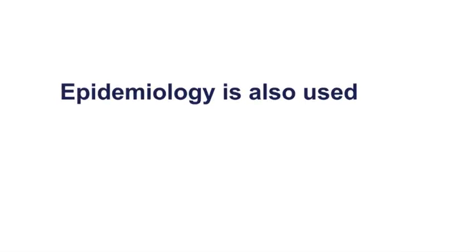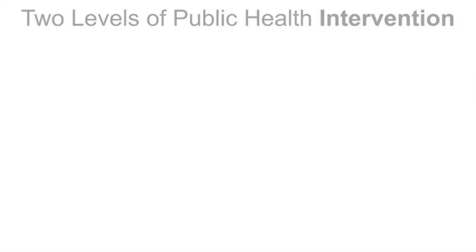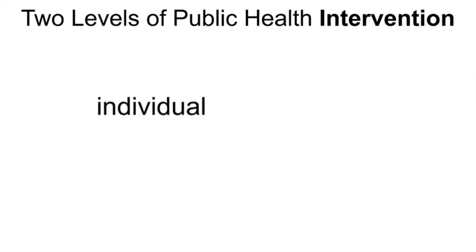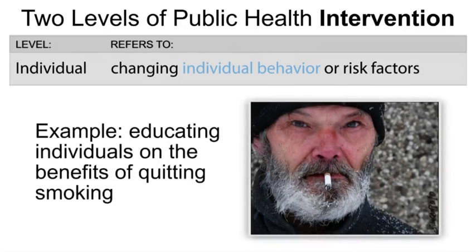Epidemiology is also used to evaluate interventions in the population. Public health interventions can occur at two levels: individual or structural. Individual interventions focus on changing individual risk factors or behavior. Individual intervention approaches rely on the assumption that people have the autonomy and capacity to make choices and then follow through on their choices. An example of an individual intervention might be educating individuals on the health benefits of quitting smoking.